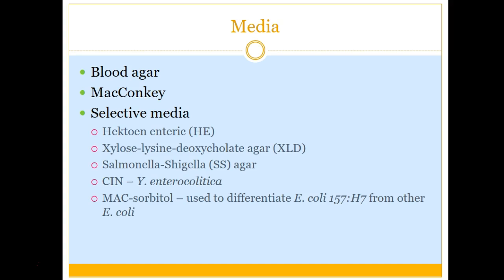As far as media goes: blood agar is supportive and grows everything. MacConkey is specifically meant to grow gram-negative rods. For more selective media, if you're looking for Salmonella or Shigella, HE, XLD, and Salmonella-Shigella agar are perfect to screen for those — you'd set those up from a stool culture specimen. CIN agar is for Yersinia enterocolitica. And for E. coli O157 screening, there's a special form of MacConkey called MacConkey sorbitol. E. coli O157 does not ferment sorbitol, so it will appear as clear colonies on that plate.